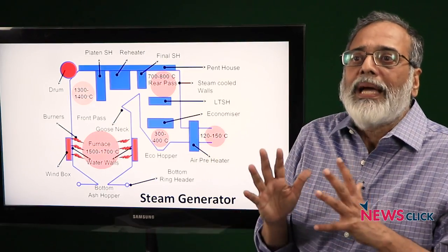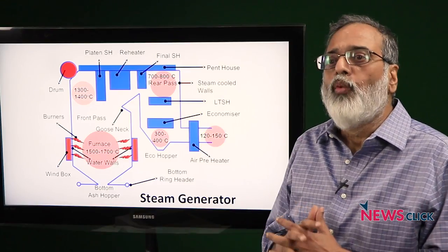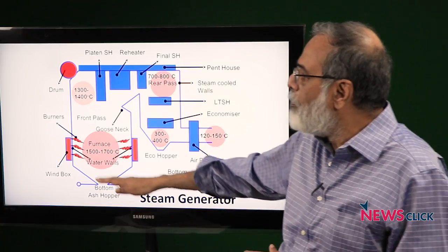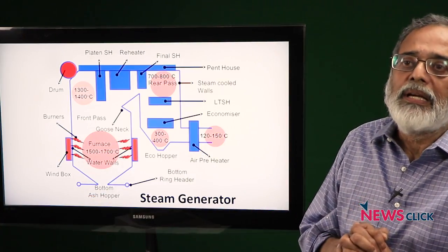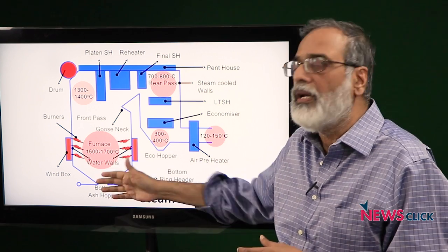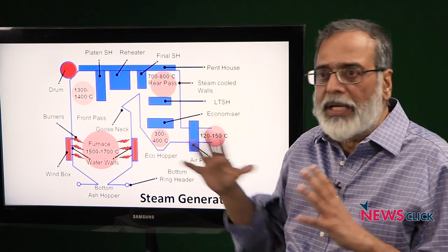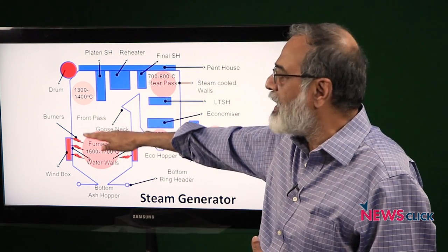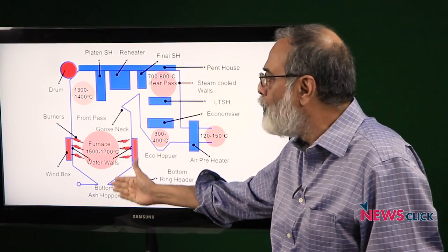The attempt by NTPC officials was to bring down the load of the unit while trying to manually see whether they could stop the clinkering or remove the clinkers from the bottom side of the boiler. When you bring down the load, clinkering may reduce but if clinkering has already taken place and there is a lot of ash build up, then removing it is not easy.